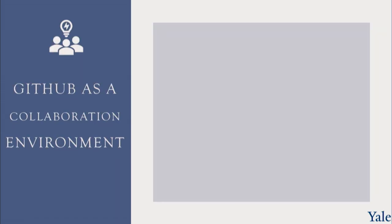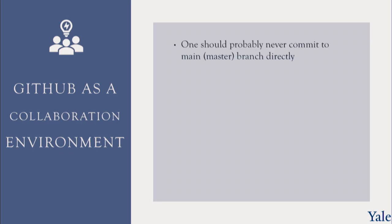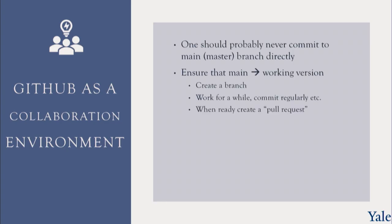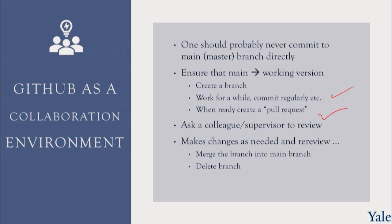The final thing we're going to talk about in this segment is the use of GitHub as a collaboration environment — it's more than a place to store code, it's a place where we can collaborate. A good rule of thumb: one should probably never commit to the main or master branch directly. You ensure that the main always has a working version. When we want to make changes, we create a branch, work for a while, commit regularly, and when ready, we create a pull request — saying this branch is ready to be merged into the main. We ask a colleague or supervisor to review, make changes as needed, respond to comments, and when ready, merge the branch into the main and delete it, as it was a temporary structure.